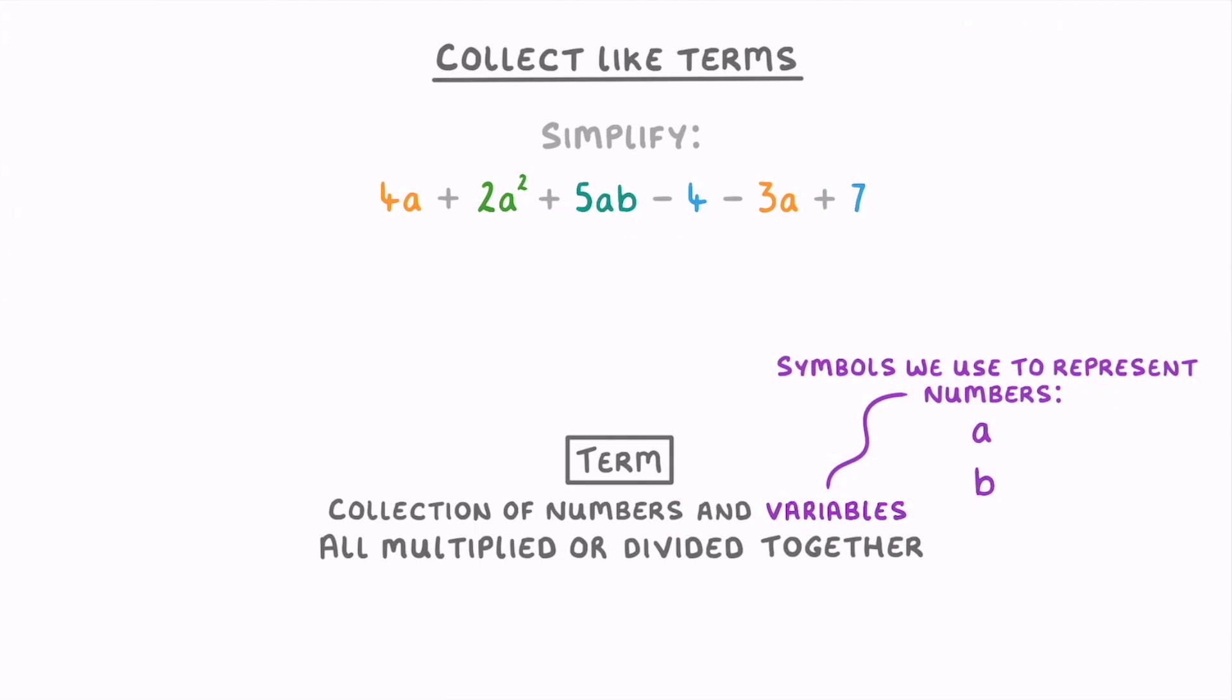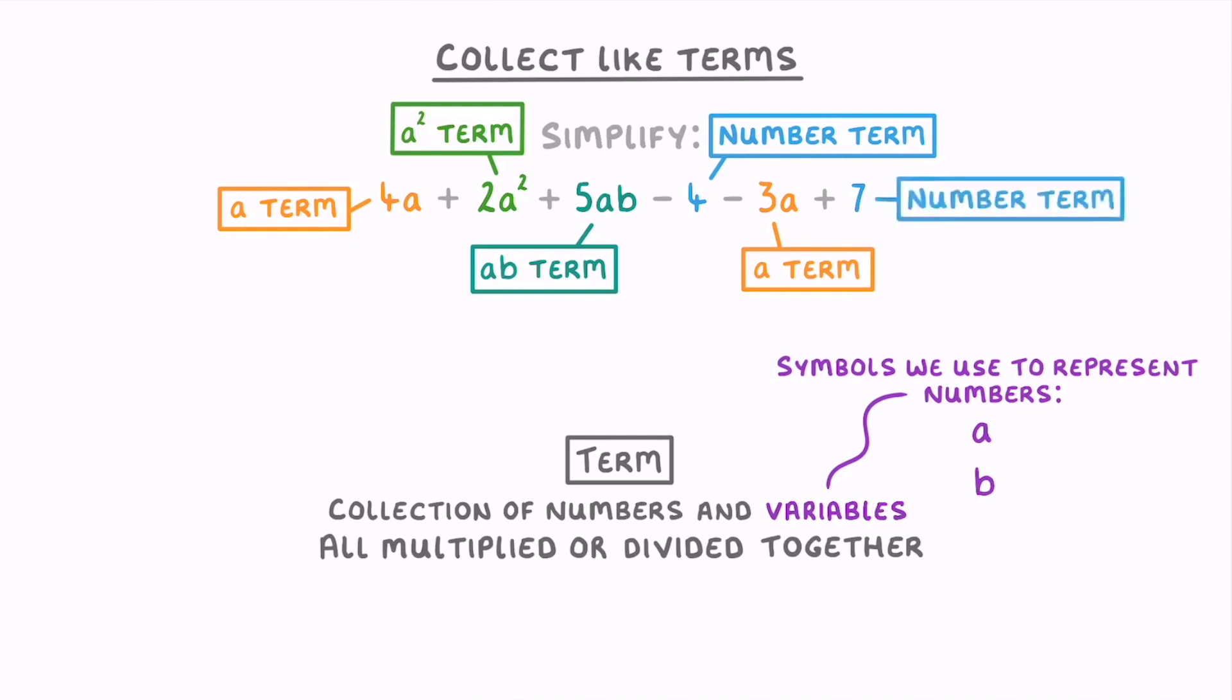So in our example, you could say that we have an a term, an a squared term, an ab term, a number term, another a term, and another number term.